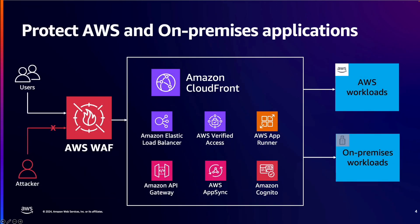AWS WAF can be used to protect a variety of applications running on AWS, as well as those running on-premises. For AWS workloads, there are several options to use AWS WAF, which you can see on the slide here. You should always consider putting CloudFront in front of your regional resources, such as application load balancers or API gateways, to further improve performance, security posture of your application, and optimize costs.